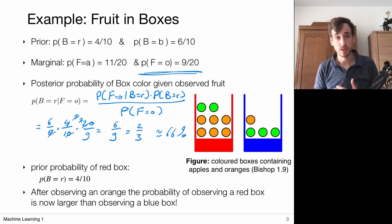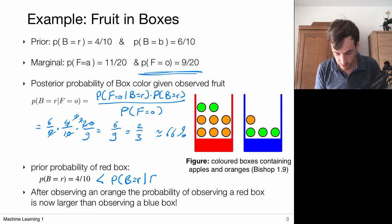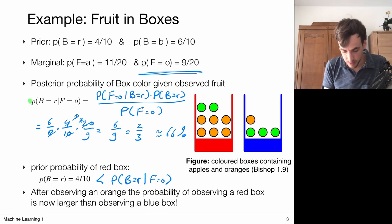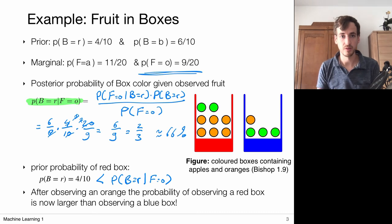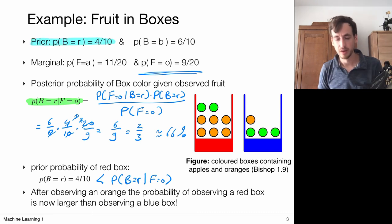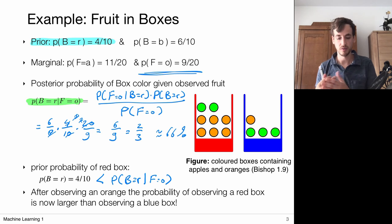This is really interesting: our prior probability of picking the red box was only 40%, but once we have observed an orange, the probability of having picked from the red box changes to 66%. The posterior probability is much larger than the prior. In terms of terminology: before observing anything we had a prior probability of 4/10, and after observing part of the process we gain more information and get a posterior probability — the probability of the box being red given that we made a particular observation.